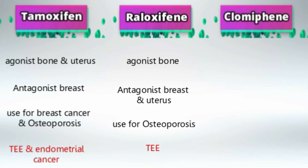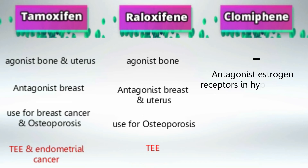Clomiphene doesn't have any estrogen agonism effect, but it does have antagonism effect in the hypothalamus, where it blocks the estrogen receptor. Blocking the estrogen receptor in the hypothalamus stimulates negative feedback, as the hypothalamus will think that we have low estrogen in the body, so it will increase LH and FSH.